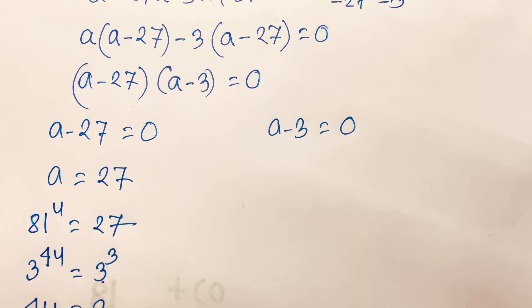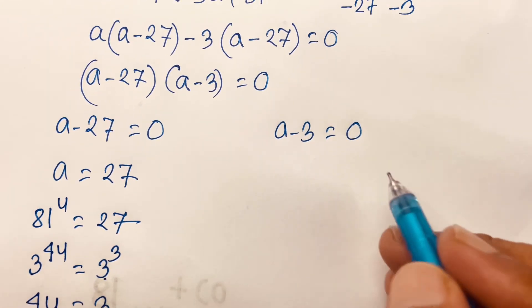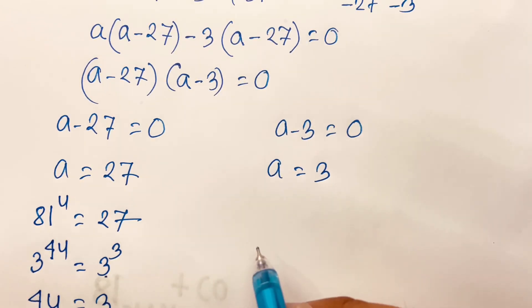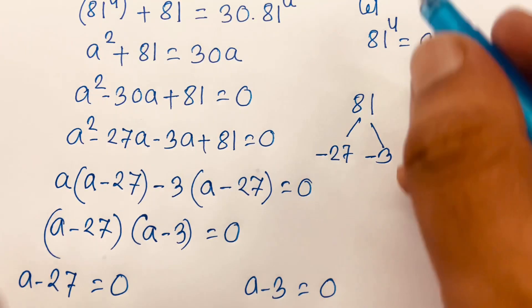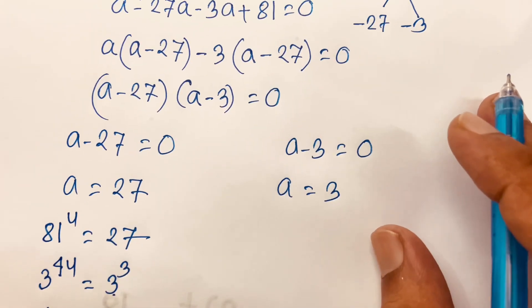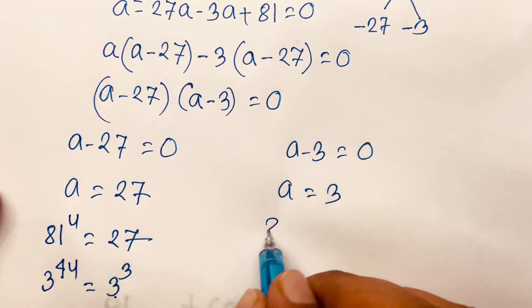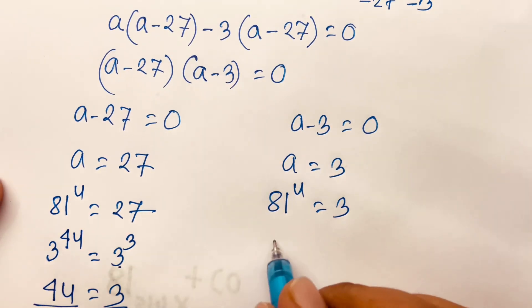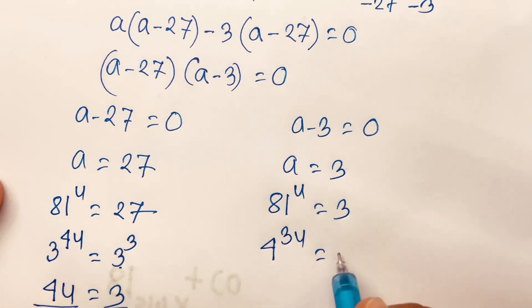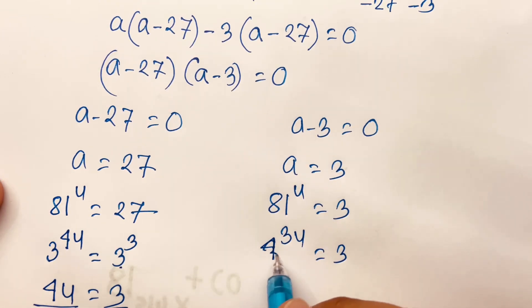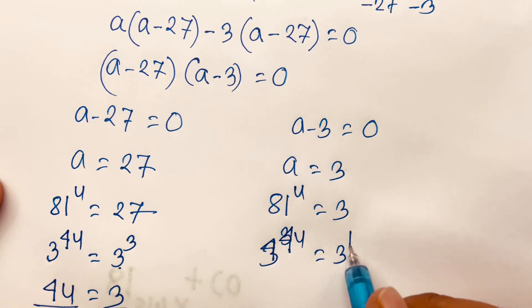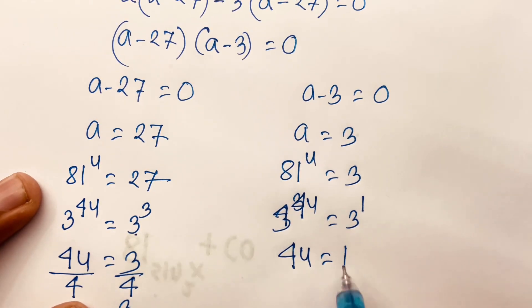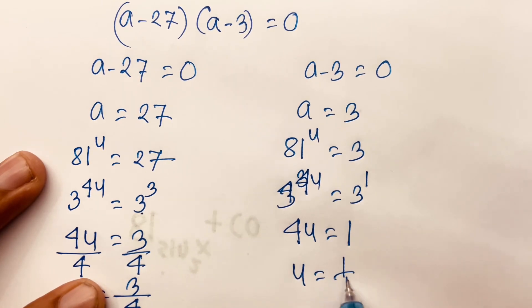For the other case, a minus 3 equals 0, so a equals 3. And a is 81 power u, so 81 power u equals 3. Now 81 is 3 to the power 4, so 3 to the power 4u equals 3 to the power 1. Then 4u equals 1, and u equals 1 over 4.